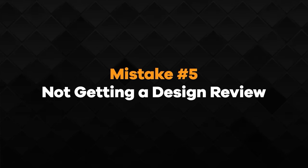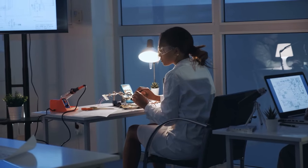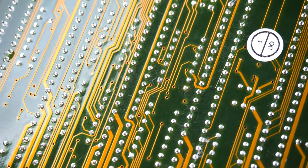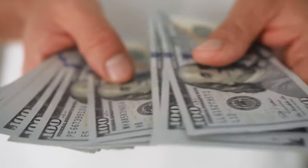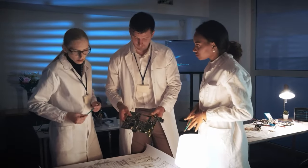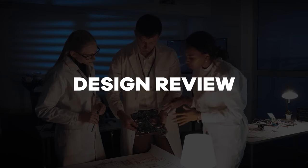Mistake number five is not getting a design review. If you don't get an independent design review of your product before you prototype it, then you may be throwing money away. It doesn't matter how good an engineer may be — nobody is perfect, and all engineers make mistakes. Getting custom prototypes made, whether it's the electronics PCB or the product's enclosure, isn't cheap. The more prototype iterations you require, the more it's going to cost you in total, and it's also going to take a lot longer to bring the product to market. One of the best ways to reduce the number of prototype iterations is to get a second opinion called a design review.